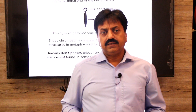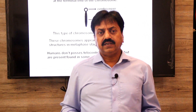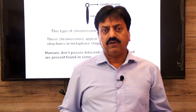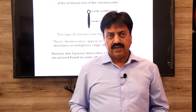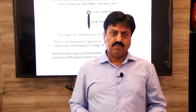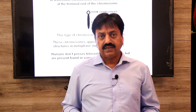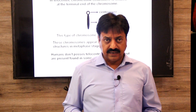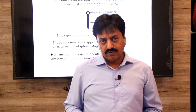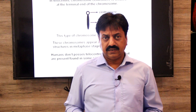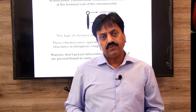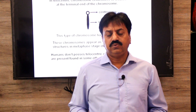So, on the basis of the position of the centromere, the four types of chromosomes are: metacentric, submetacentric, acrocentric, and telocentric. Thank you, dear students, and wishing you all the best.